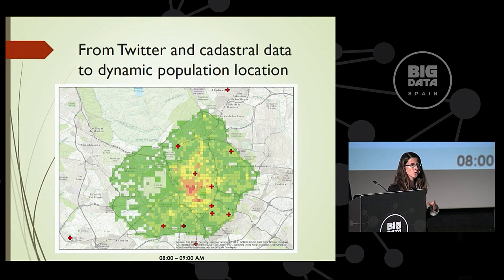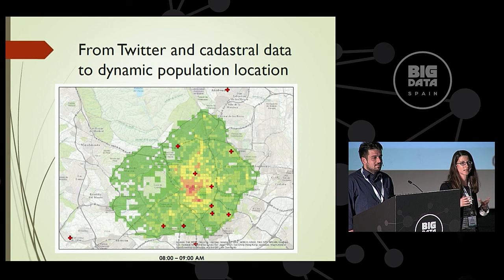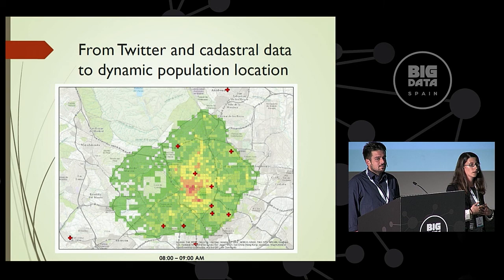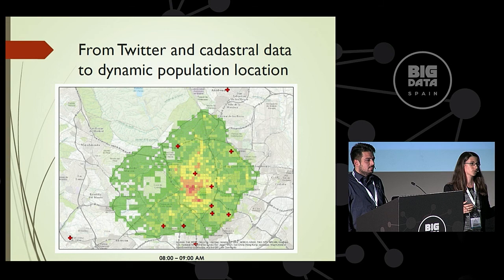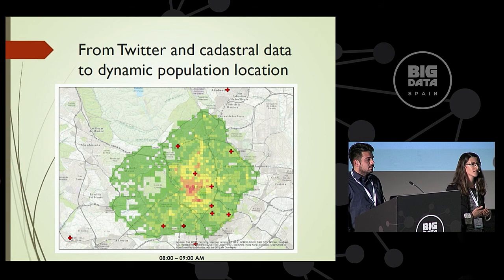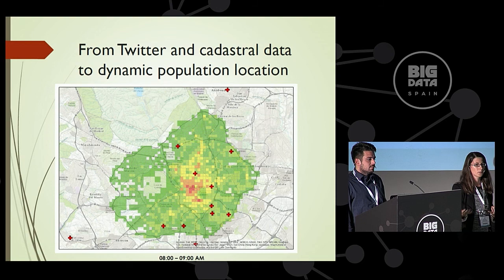What we did was compute where people are at different times of the day in different parts of the city. We are very used to computing accessibility in a static way, but we know that we move. If you consult traditional data sources like the census, we can know where people are at night — their place of residence. But most people move during the day, and if we spend 8 or 10 hours at work, maybe we are more interested in having good accessibility from our workplace or from a leisure area during the weekend. So what we are doing — this is a work in progress — is to combine several data sources. First, we have the census of population, a good and reliable data source, so we know where people live.